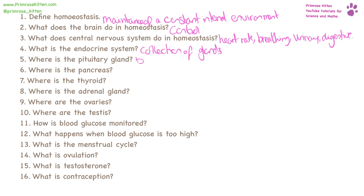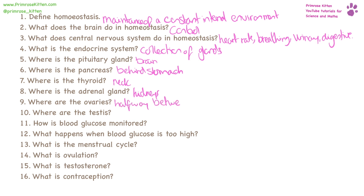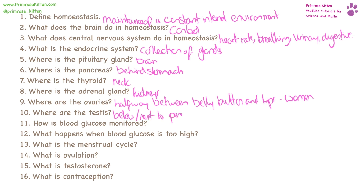The pituitary gland is located in the brain. The pancreas is behind the stomach. The thyroid gland is in your neck. The adrenal glands are by your kidneys. Your ovaries are halfway between your belly button and hips — and that is in women only. Testes hang below the penis — and that is in men only.